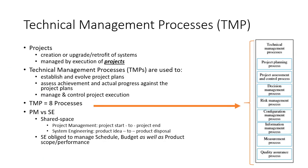The technical management processes deal with the design, development, and execution of systems in the form of a project. The project is the unit of measurement in which these systems are developed, and within the technical management processes there are eight processes used to manage projects.